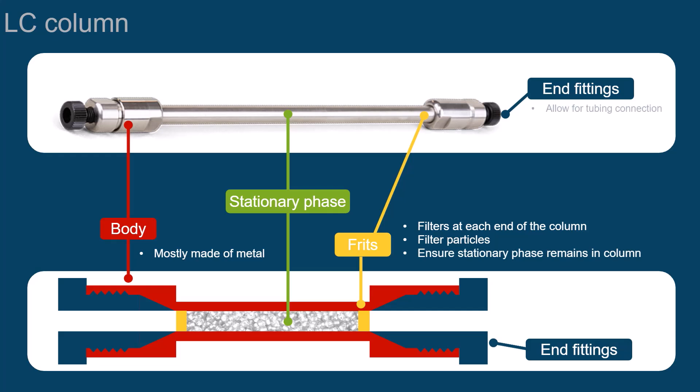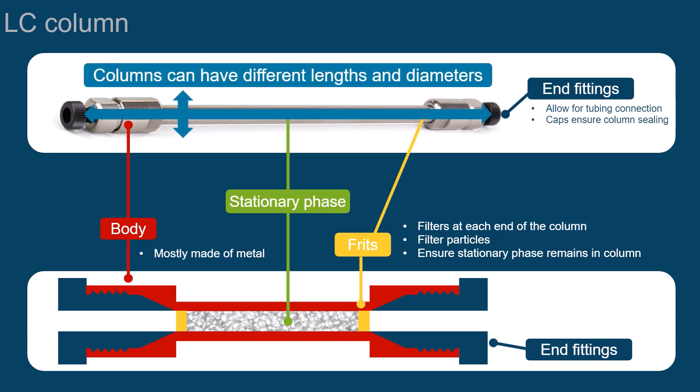The end fittings allow for tubing connections between the column and the LC system, or caps can be used to seal the column. Columns come in different length and diameters.